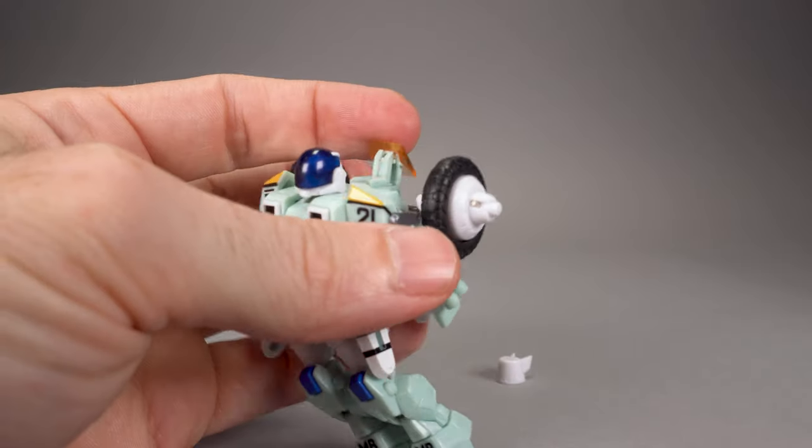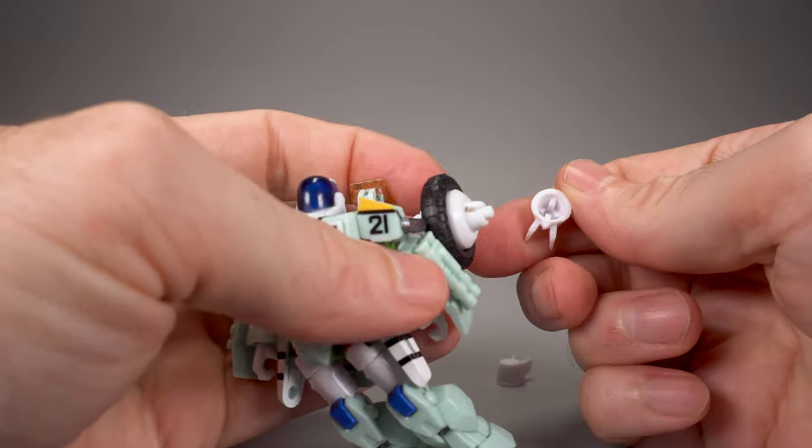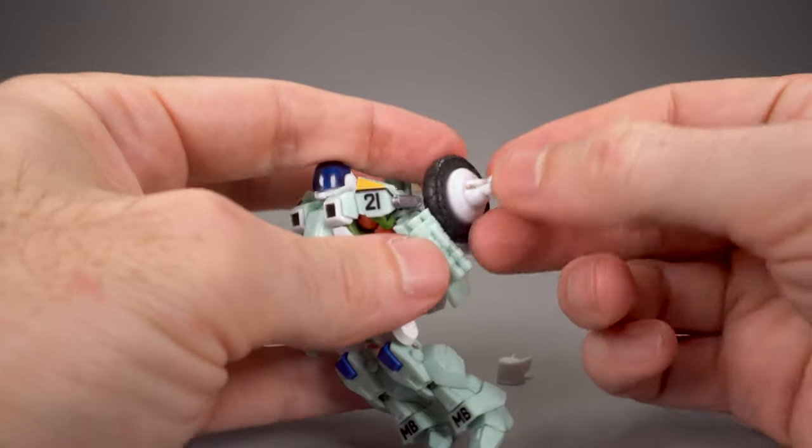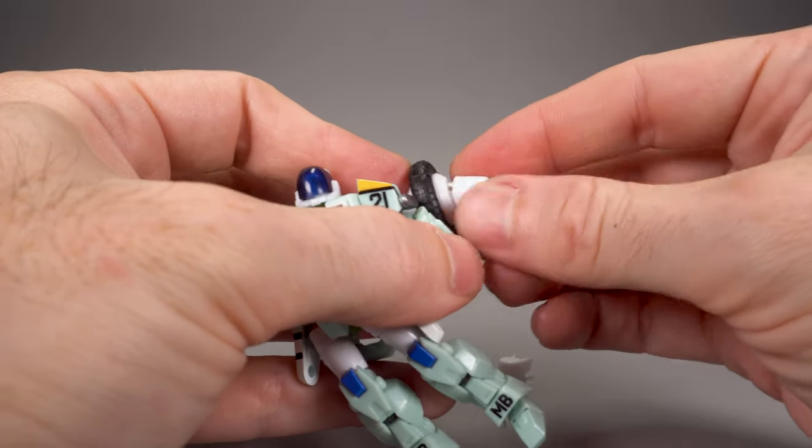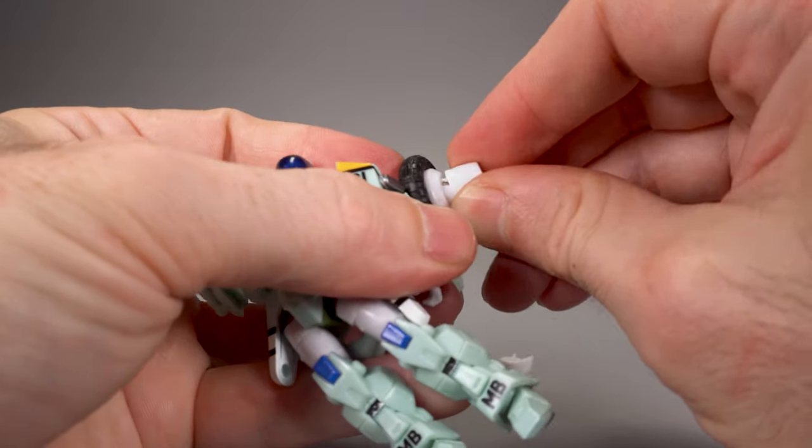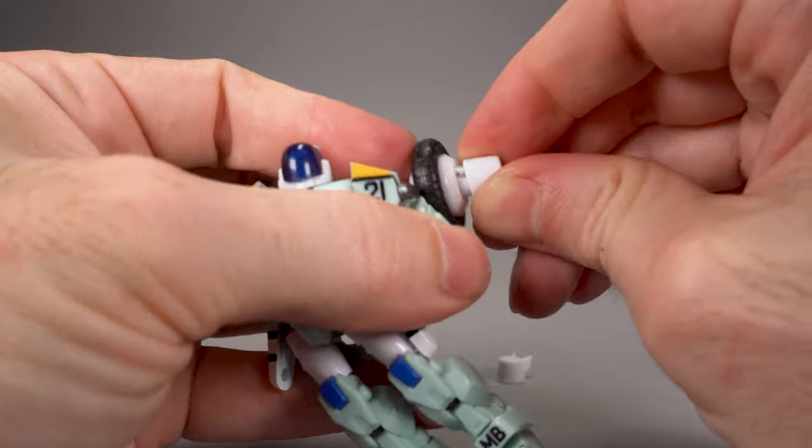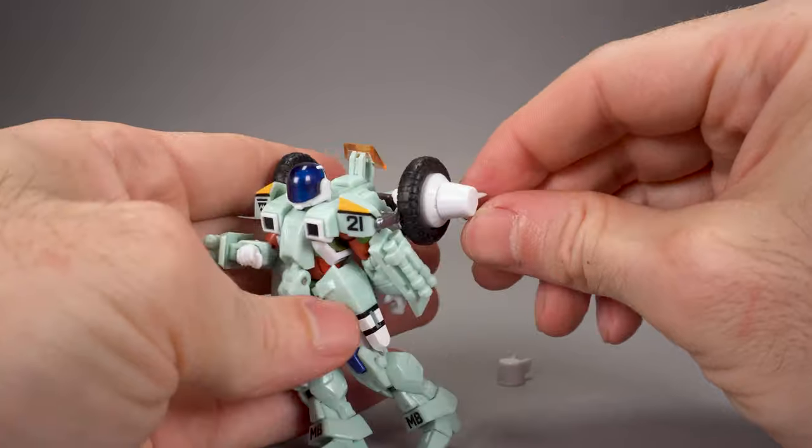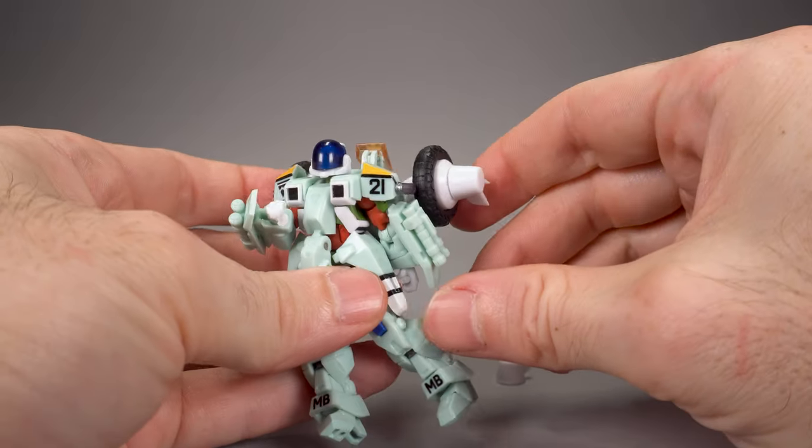For whatever reason installing the maneuver jets is kind of a pain in the butt they've got these pegs here that are supposed to line up you just kind of get a feel for that and make sure it's straight on there get onto your home there it is okay so do that and then do the same thing on the other side.